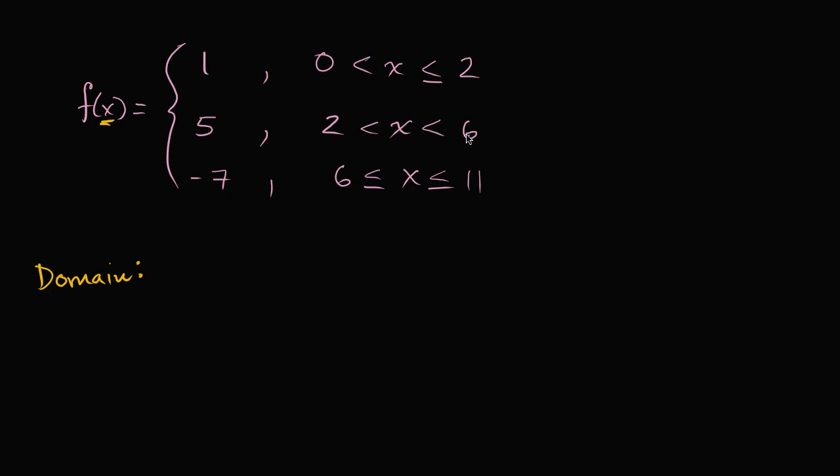And as we approach six, but right when we get to six, we fall into this clause right over here, all the way up to and including 11. But if we get larger than 11, the function is no longer defined. I don't know which of these to use. And if we're at zero or less, the function is no longer defined as well.